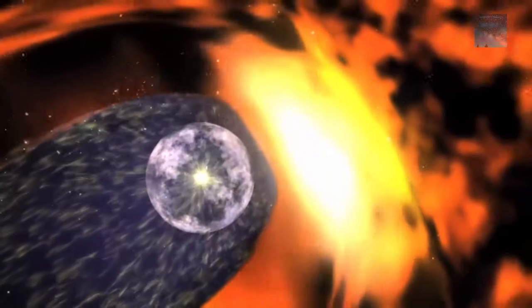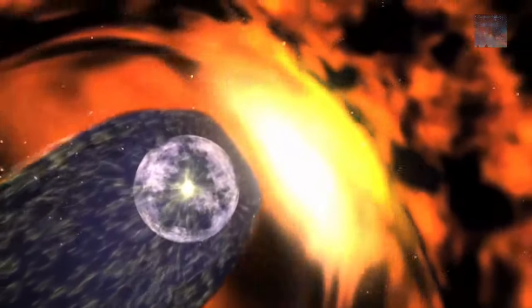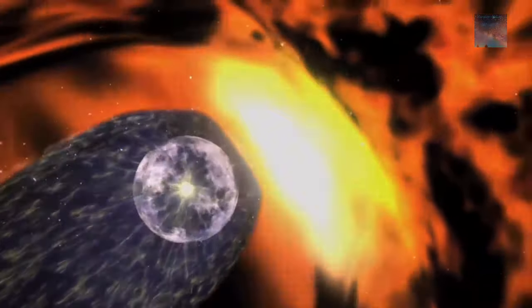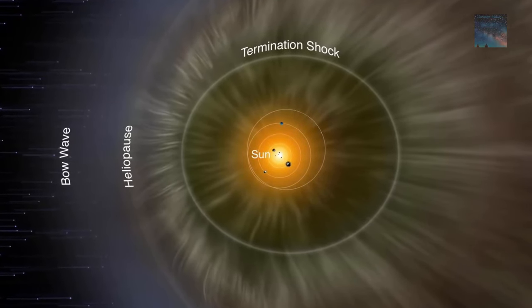But the solar wind's journey from the sun is not a smooth ride. On its way to the very edge of our heliosphere, known as the heliopause, the solar wind passes through distinct layers.